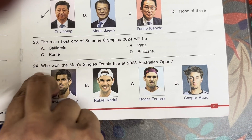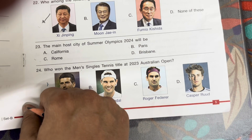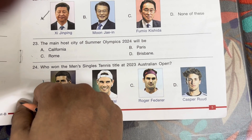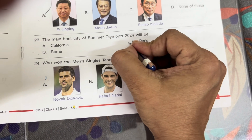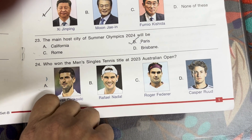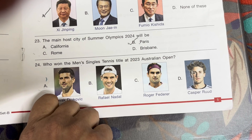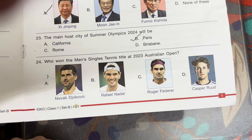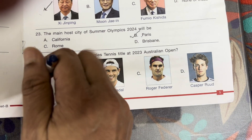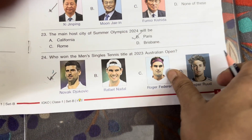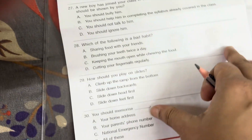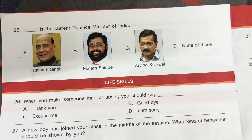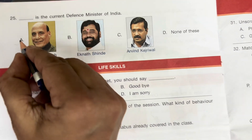Question 23: The main host city of Summer Olympics 2024 will be — California, Paris, Rome, or Brisbane? Answer is B — Paris. Question 24: Who won the men's singles tennis title at the 2023 Australian Open? Novak Djokovic. Question 25: The current defence minister of India is — Rajnath Singh.